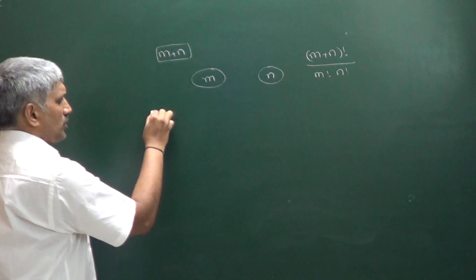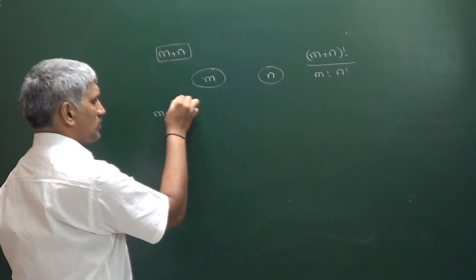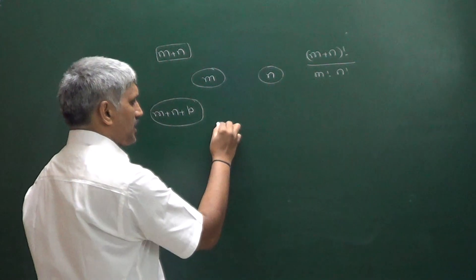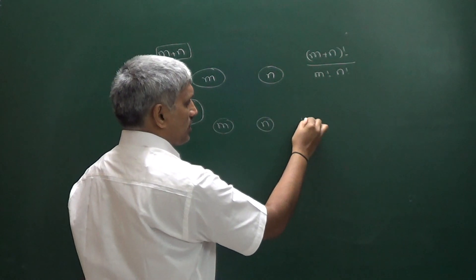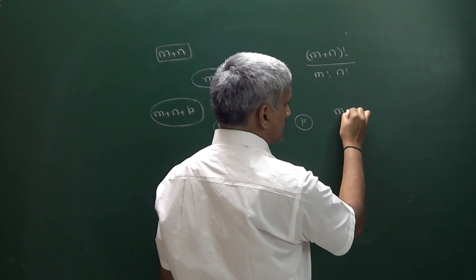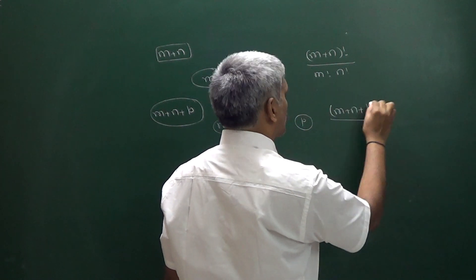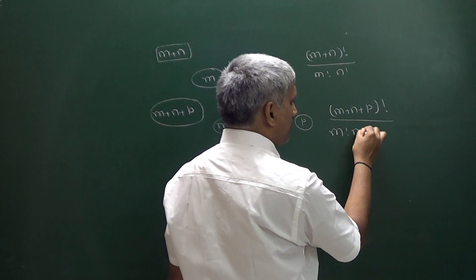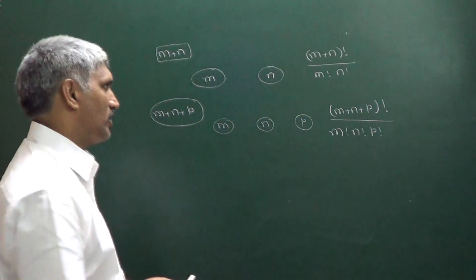Suppose M plus N plus P items we have to divide into 3 groups — one group containing M items, another group containing N items, the third group containing P items. Here also we can write the answer as M plus N plus P factorial divided by M factorial into N factorial into P factorial. So here there is no problem at all.